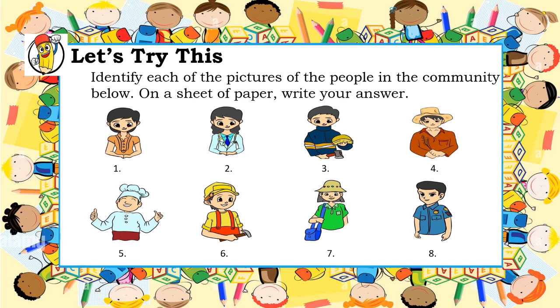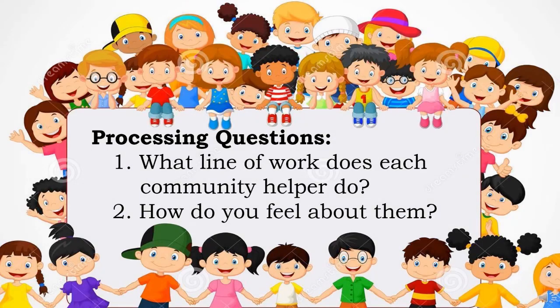Now for your first activity, which is Let's Try This. You are going to identify each of the pictures of the people in the community below. On a sheet of paper, write your answer. After you've finished the first activity, you may now answer the two processing questions: 1. What line of work does each community helper do? And 2. How do you feel about them?